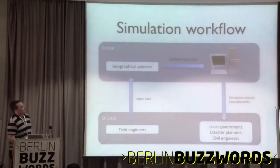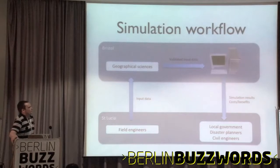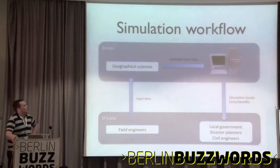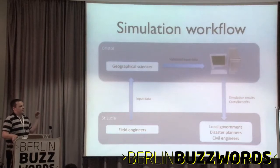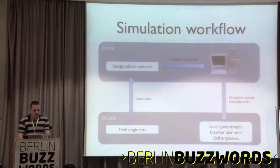They use it in a general workflow where field engineers local to wherever the problems are will go out, take soil samples, and measure things such as where the water table is, what the slope angles are, and what vegetation is around. That all goes back to Bristol, where it gets validated by geographical sciences people, then the simulation runs locally, and somehow the results have to get back to the people who make decisions. But you can only really do one situation at a time.